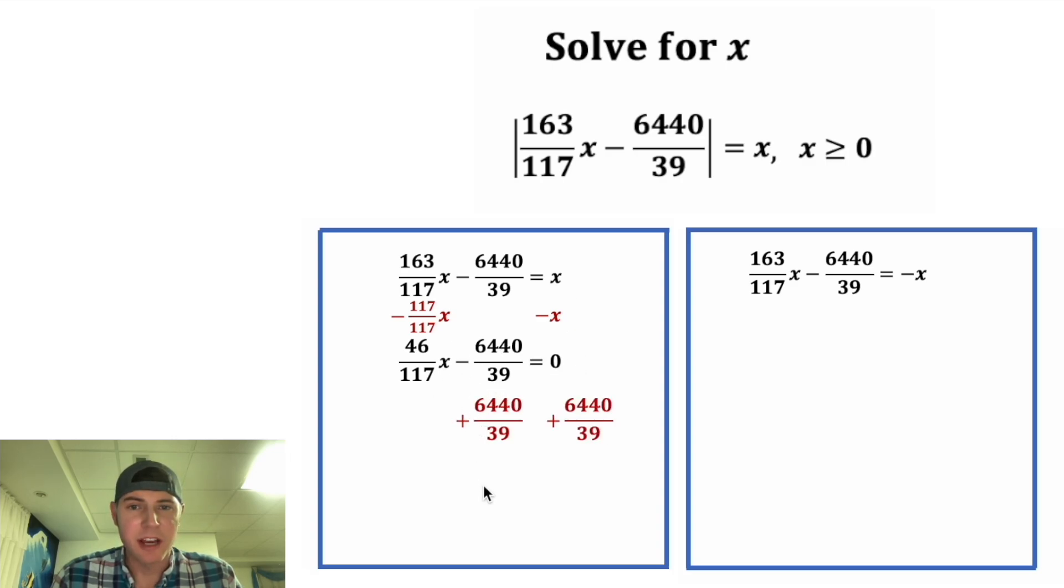Next, let's add this thing to both sides. So we end up with 46 over 117x equals 6440 over 39. Then we can multiply both sides by this reciprocal, and we get x equal to... 6440 times 117 is 753,480. And 39 times 46 is 1794. And this divided by this gives us 420. And that is our first answer for x.